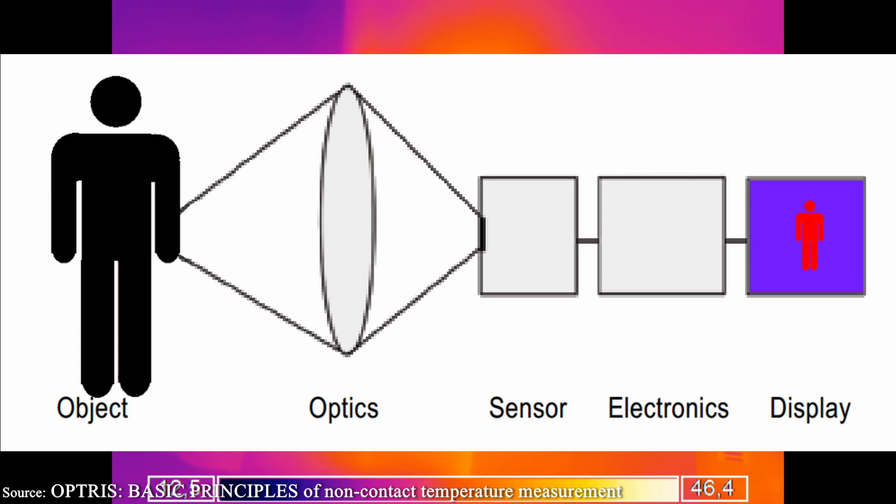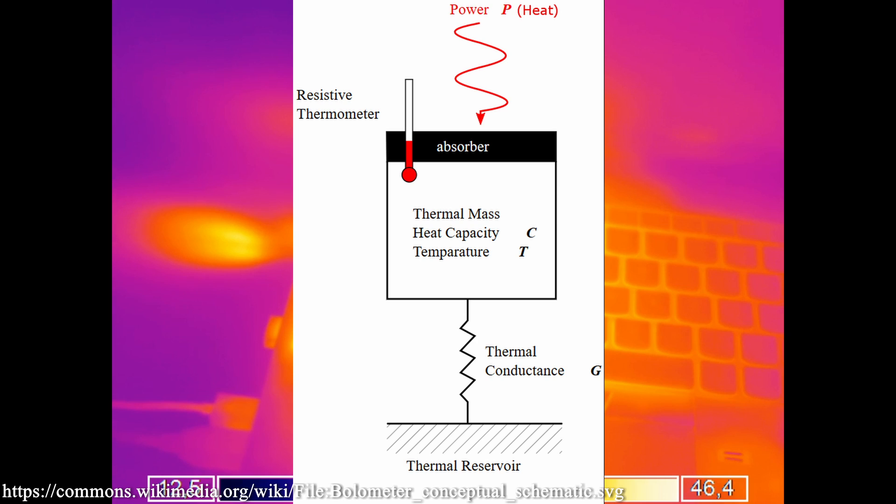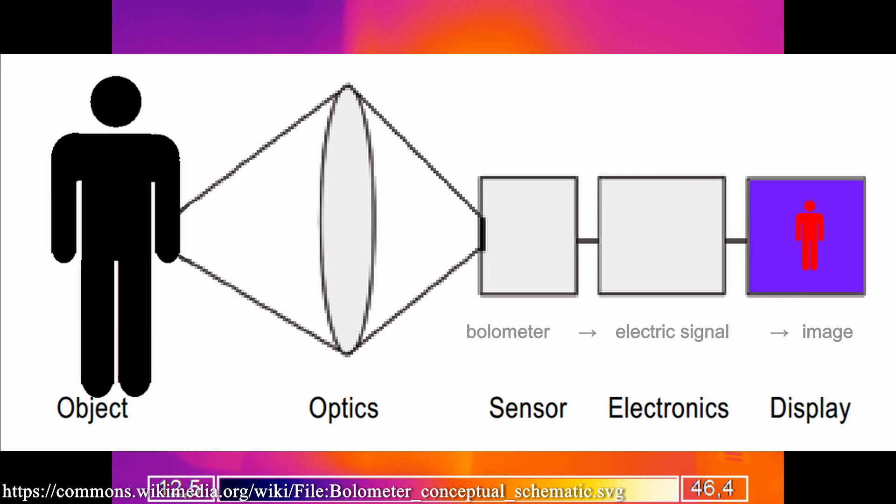The infrared camera doesn't use a normal CMOS sensor, like your normal camera does. It uses an array of micro bolometers. In short, a bolometer is just a little black piece of material with a thermometer attached to it. So if light hits it, it gets hotter and the thermometer translates this to an electric signal.